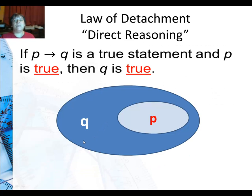Now deductive reasoning, one of the most common types of arguments is direct reasoning. If I tell you if P then Q is a true statement and P is true, then Q must be true. My favorite way of saying this for my students is by direct reasoning, if I am standing in P then I have to be in Q.